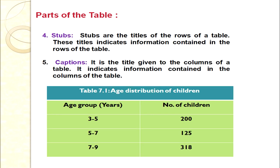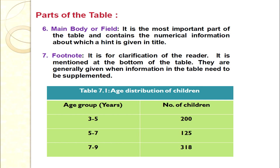Next we discuss stubs. In this example, the stub is 'age group in years.' Stubs are the titles of the rows of a table; they indicate the information contained in each row. Captions, on the other hand, are the headings of the columns of a table. They indicate the information contained in the columns — in this example the caption is 'number of children.'